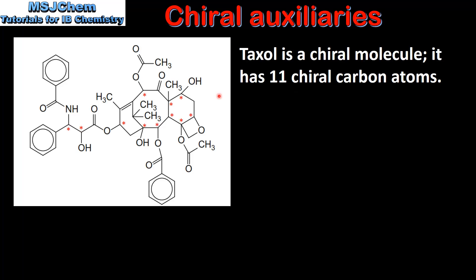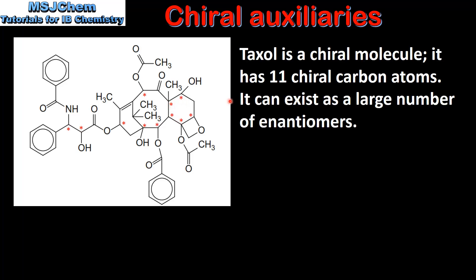On the left we can see the structure of taxol. Each red asterisk shows the position of a chiral carbon atom in the molecule. Because taxol has so many chiral carbon atoms, it can exist as a large number of enantiomers, which are mirror images of each other.